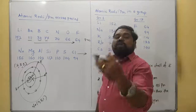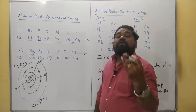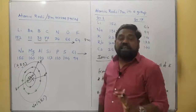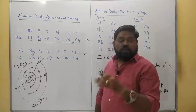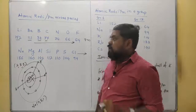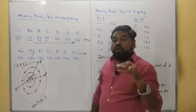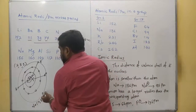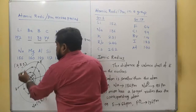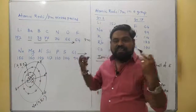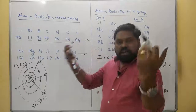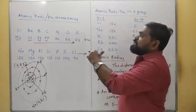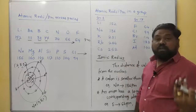This will happen across any period — as we move from left to right, atomic radii will go on decreasing. That's why alkali metals have the biggest size and halogens have the smallest size. Remember: electrons get added in the same shell, so as the number of electrons increases, nuclear charge also increases and these electrons get pulled inwards. That is the reason atomic radius goes on decreasing as we move from left to right.